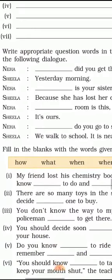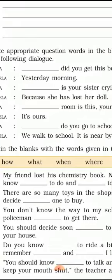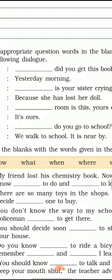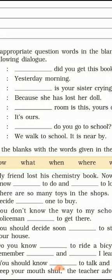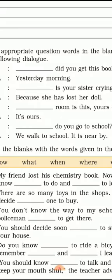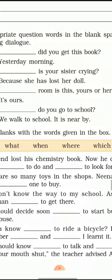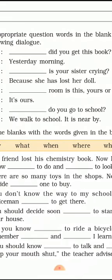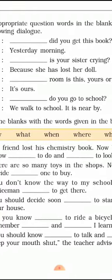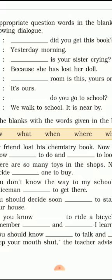Fill in the appropriate question words in the blank spaces in the following dialogue. Neha: Yesterday morning. The answer is 'yesterday morning' — that indicates time, so we write 'When'. When did you get this book? Yesterday morning. Next: Is your sister crying? The answer involves 'because', so we use 'Why'. Why is your sister crying? Next: Which room is this — yours or hers? It's ours. So: Whose room is this? Next: How do you go to school? We walk to school, it is nearby.